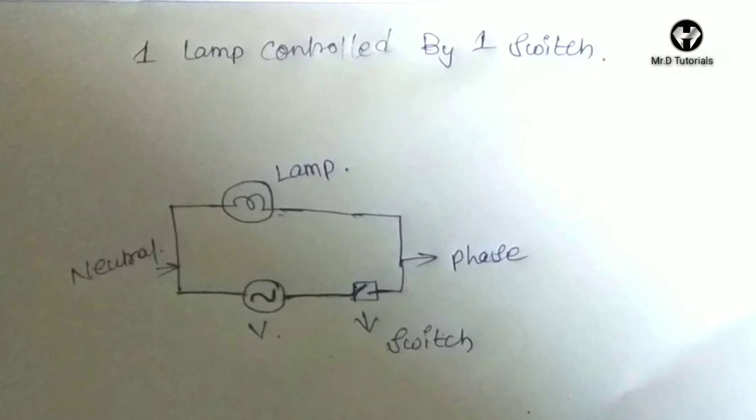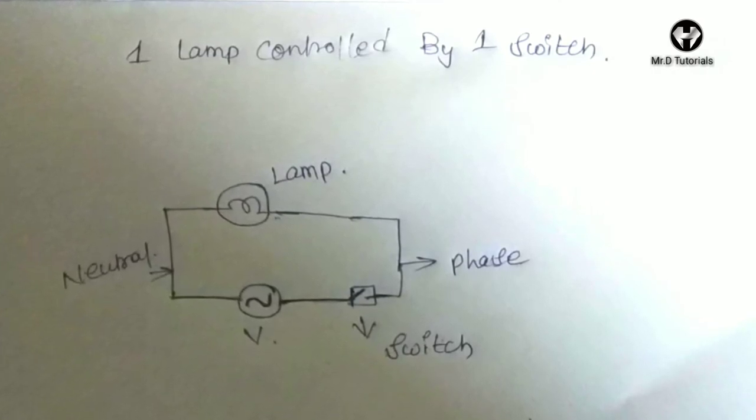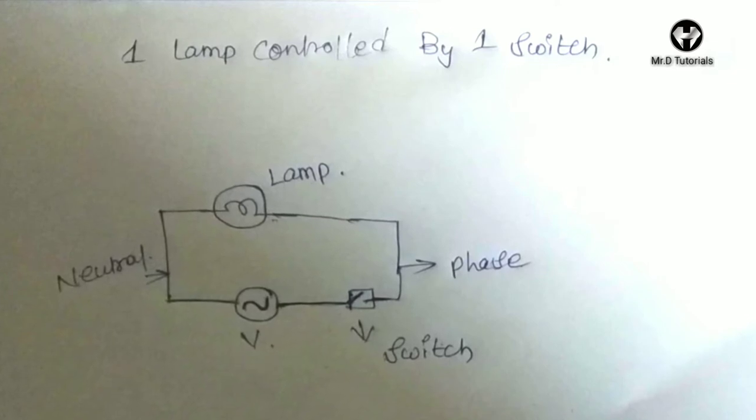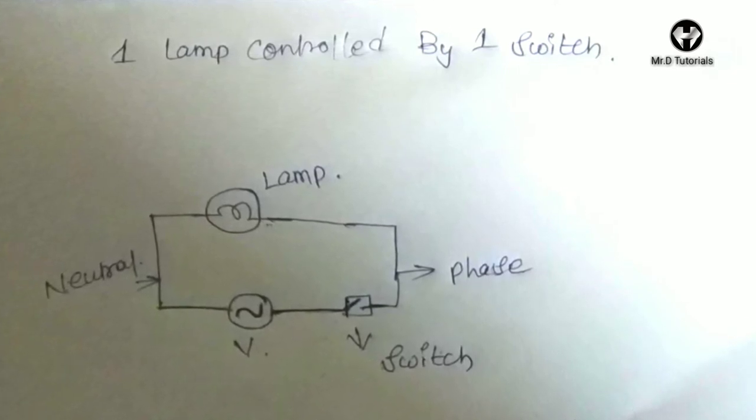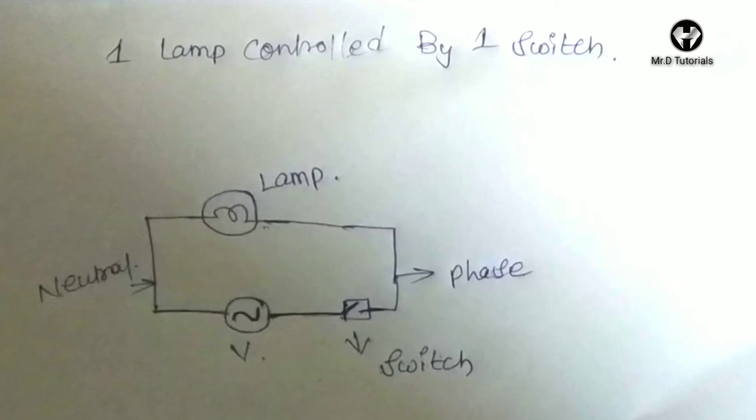So guys, this is our circuit diagram. You can see from supply mains to direct switch to first terminal, and switch to second terminal, lamp holder first terminal, and lamp holder second terminal to direct supply neutral.